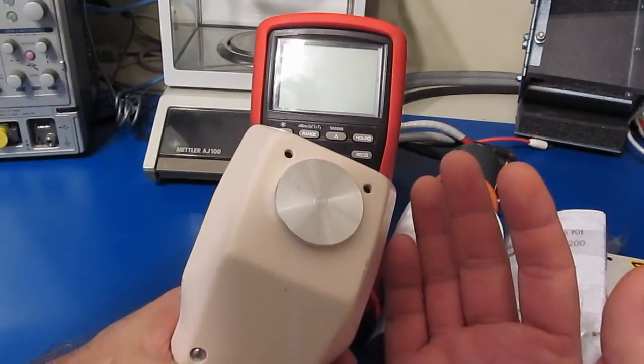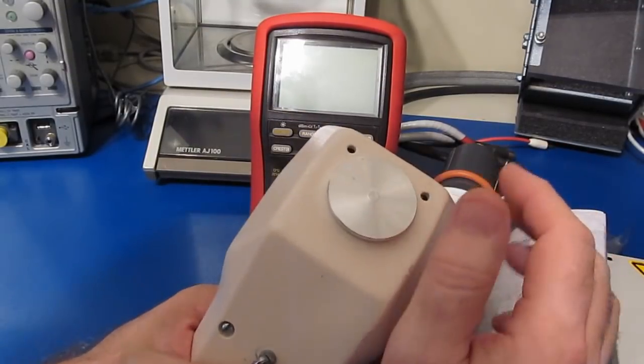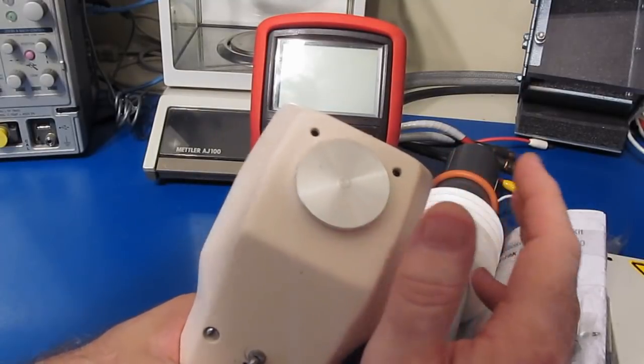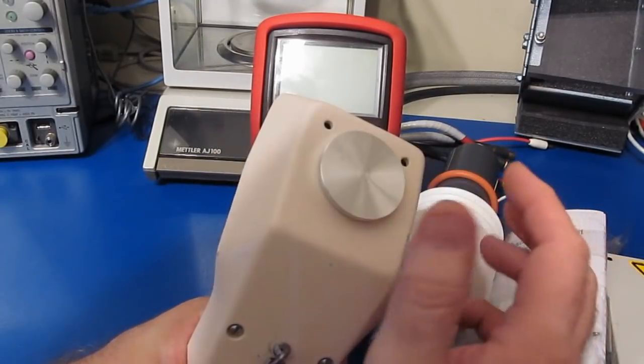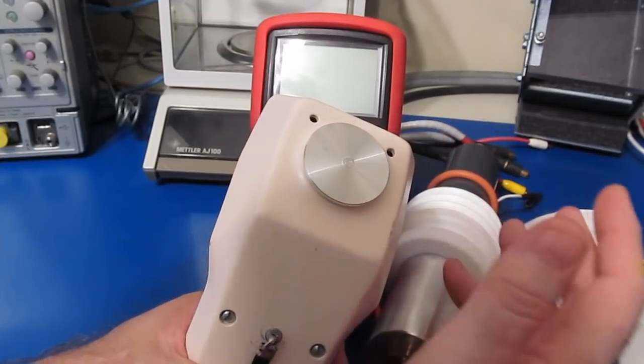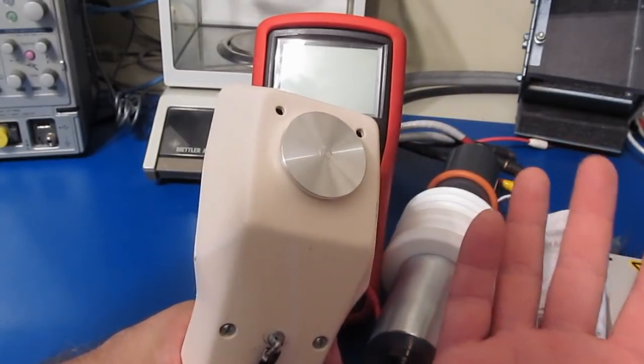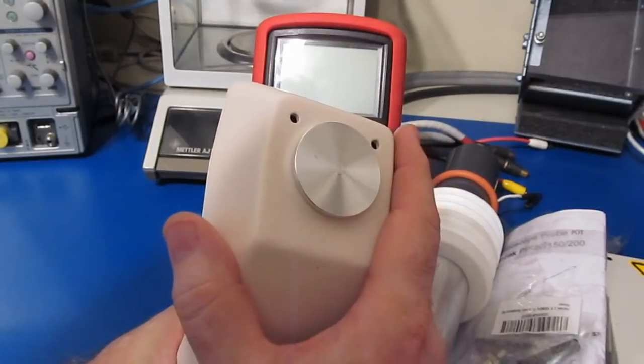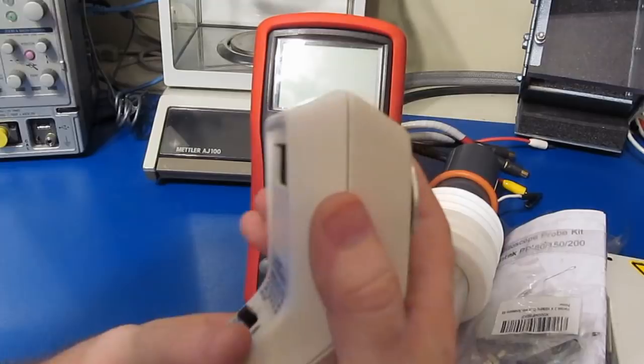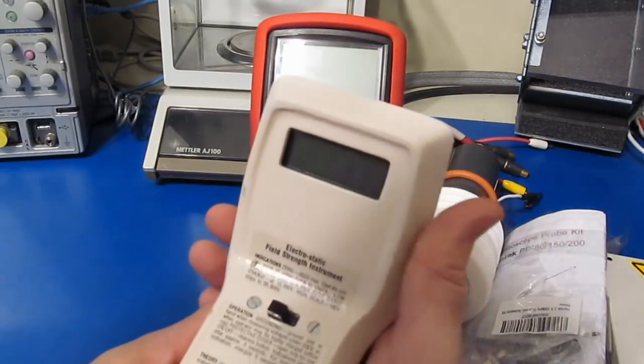So the company that he worked for that produced these meters started making a few of them. I guess other industries found out about it. One of them was a factory up in Canada, and I believe that their end product was plywood. They had the same problem where I guess as you process that plywood it can also build up a lot of static. They actually had a factory that was burned to the ground. So they approached the company that produced this meter and then this thing found another application.